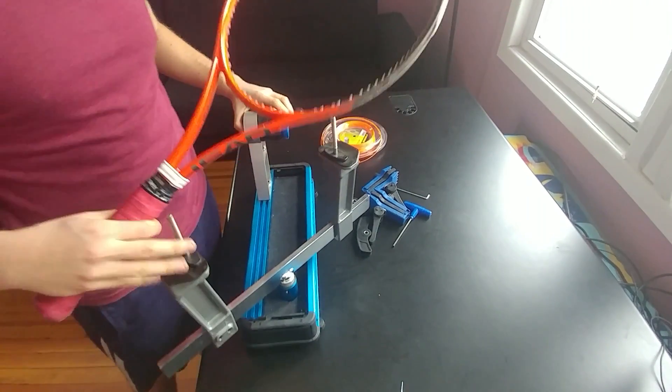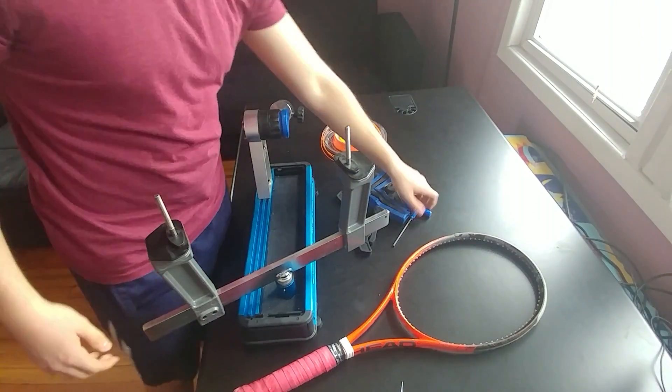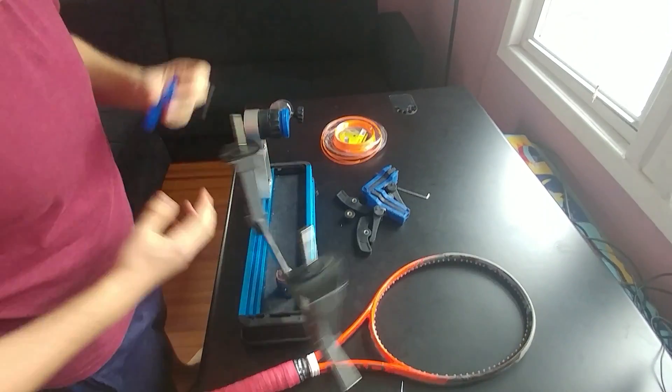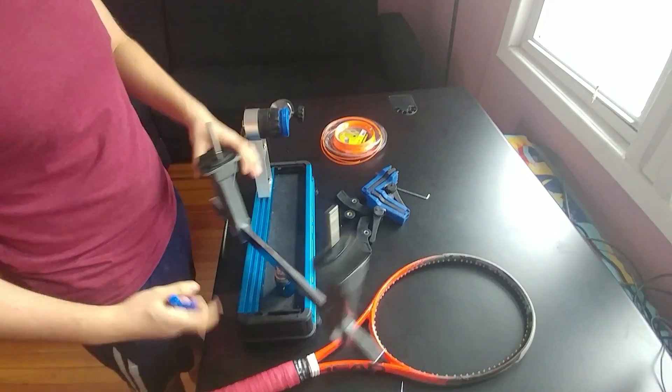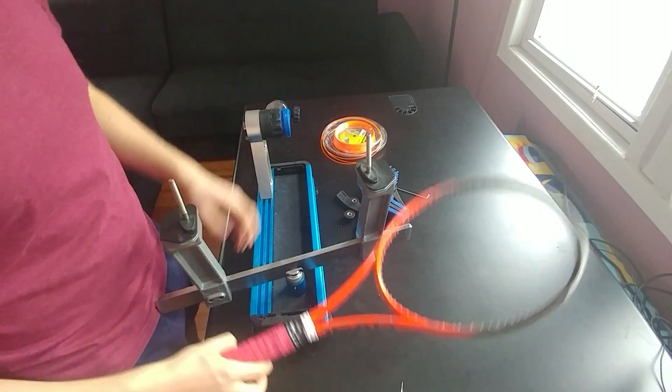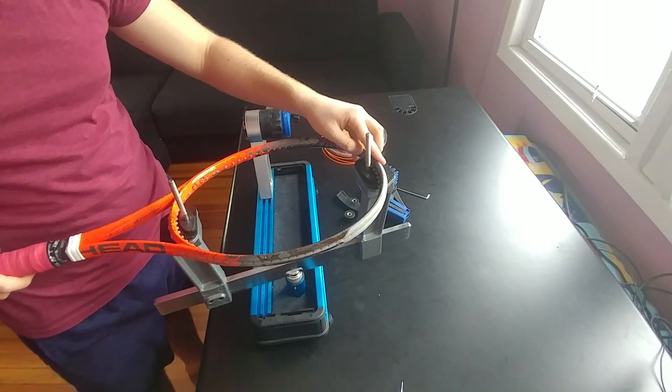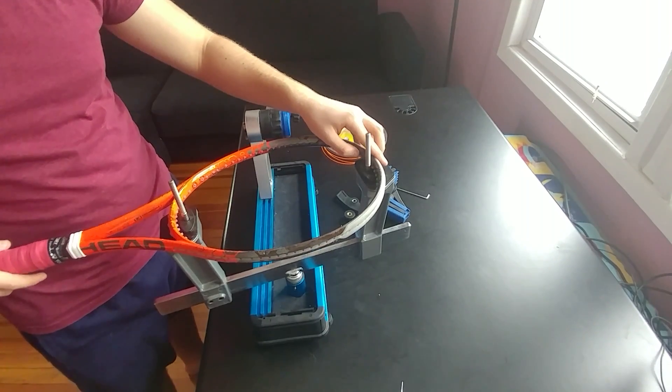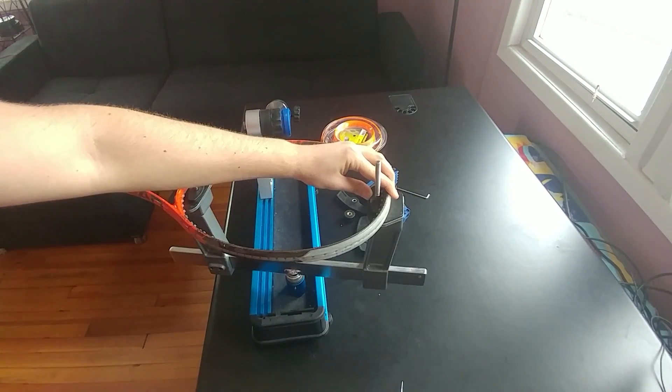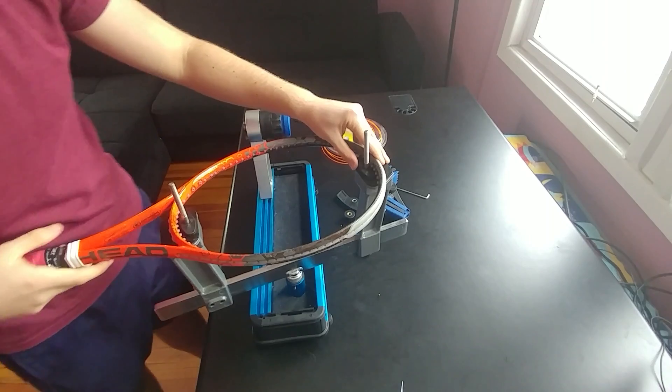Now what you want to do is place your racket. First of all, you can adjust the movement of this using this tool right here so you can move this back and forth. Mine is already adjusted so I'm not going to do that, but after you do that you place your racket. Actually I'm going to adjust this a little bit.